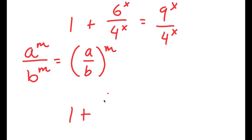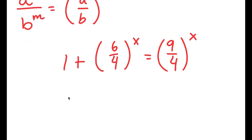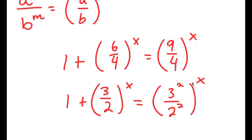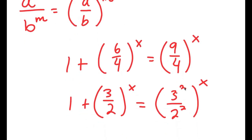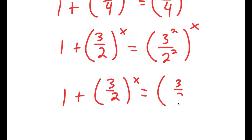6^x over 4^x equals (6/4)^x and 9^x over 4^x equals (9/4)^x. I can simplify these fractions: 6 over 4 is 3 over 2, and 9 over 4 I'm going to rewrite as 3 squared over 2 squared. Using the property again, that's (3/2) squared to the power of x.